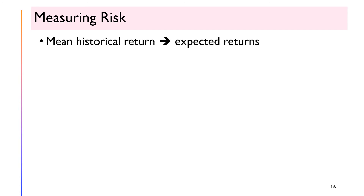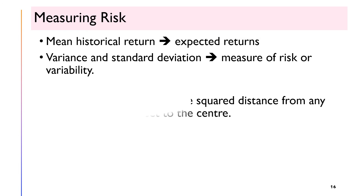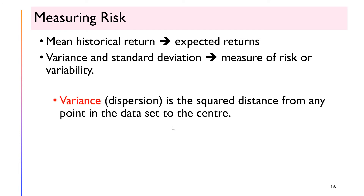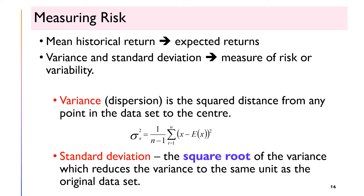The expected return is the average return that an investment is expected to produce over time. We can use mean historical return as a proxy for expected returns. Both variance and standard deviation are measures of risk or variability. Variance is the dispersion, or the distance from any point in the dataset to the center. Variance is a measure of how actual values differ from expected values — it is the squared deviation from the expected return. Standard deviation is the square root of the variance, which reduces it to the same unit as the original dataset.